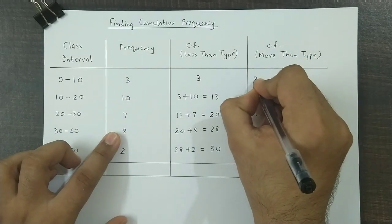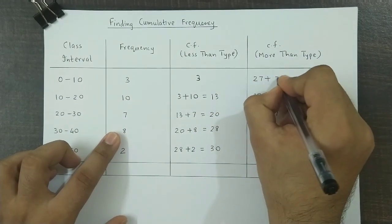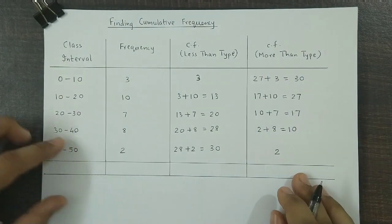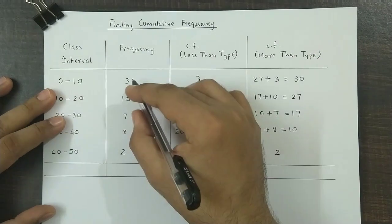17 plus 10, so 17 plus 10 is equal to 27. And lastly, 27 plus 3, so 27 plus 3, this is equal to 30.